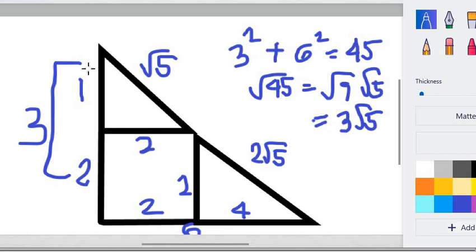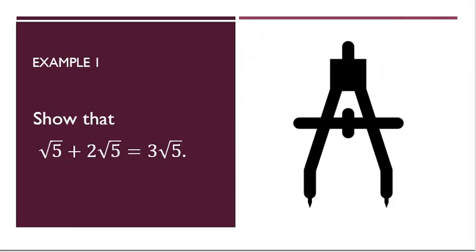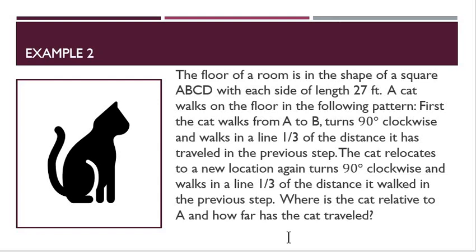We know that this is correct because we just joined this square root of 5 and this 2 square root of 5. Let's go to our next problem. The floor of a room is in the shape of a square A, B, C, D with each side of length 27. A cat walks on the floor in the following pattern: first, the cat walks from A to B, turns 90 degrees clockwise, and walks in a line one-third of the distance it has traveled in the previous step. Where is the cat relative to A, and how far has the cat traveled? Let's first try to understand the problem.